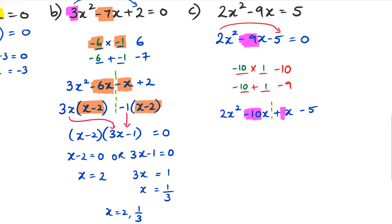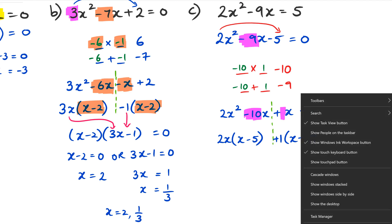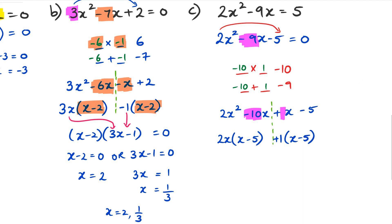I split the equation into two parts and factorize each side. On the left, 2x is a common factor, giving (x − 5). On the right, I have +x − 5, so I take out +1 as a common factor, which also gives (x − 5). Now (x − 5) is a common factor on both sides. Taking it out, the remaining bracket is (2x + 1) — the 2x comes from the left and the +1 comes from the right.